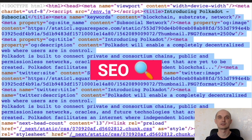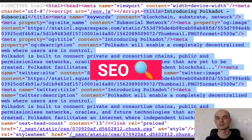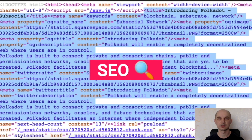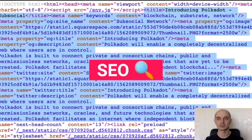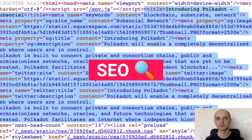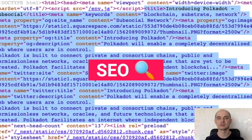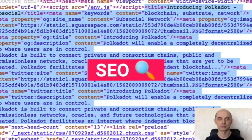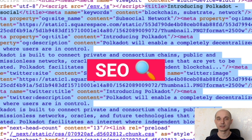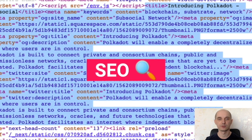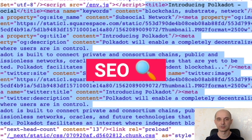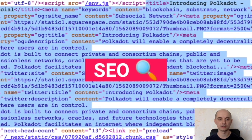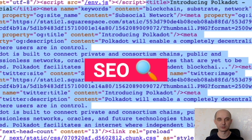Another cool feature of SubSocial is that it's search engine optimized. Content is rendered on the server side and will be indexed by Googlebot and other search engines. Looking at the source code of a page in the browser, you can see that the server already returns the title of the document, keywords, tags, and other information like site, image preview, and description. We include meta tags like OG open graph from Facebook and also support meta tags from Twitter.